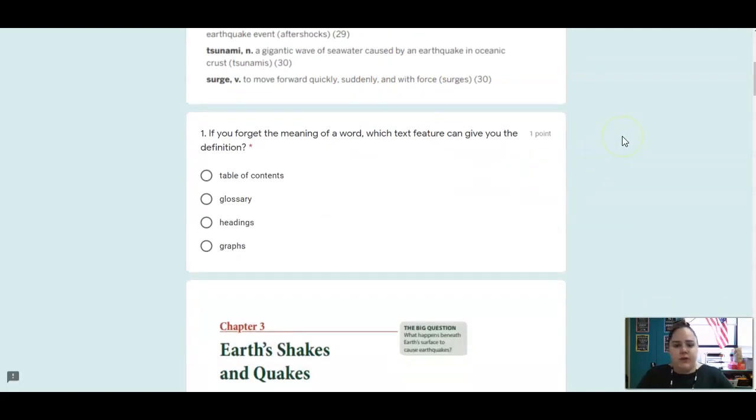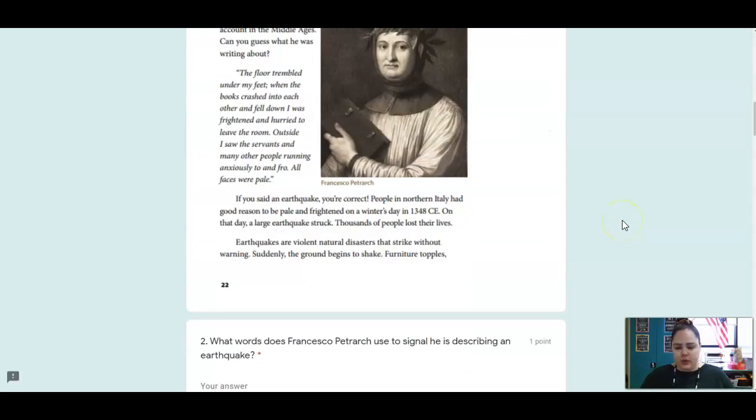Number one is a quick review. Which one of those text features will tell us the definitions to a word? Is that the table of contents, the glossary, the headings, or the graphs? I know many of you don't have your actual book with you, but think about text features that we've learned about for the past couple years. Which one tells us definitions, meanings of words?